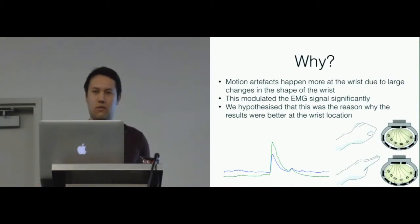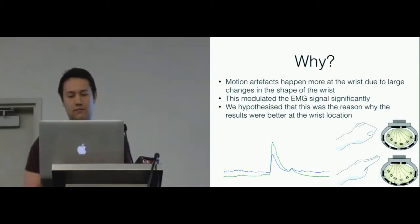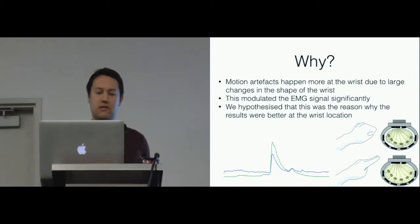But we had a thought about why is this the case. The wrist shape changes a lot due to tendon movement at the wrist as the tendons are more superficial. As explained earlier, there are devices which work on this principle. There is not so much of this kind of change in musculature at the mid forearm location, so it's quite specific to the wrist. After observing the signal in more detail, we found that the EMG signal was affected quite significantly by this kind of tendon movement. We theorized that this was, in fact, the reason why the EMG works better at the wrist.